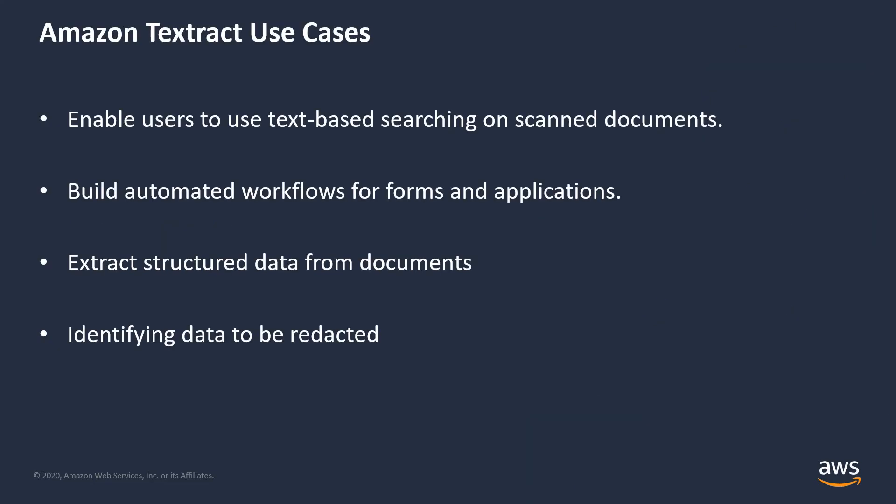Some examples of use cases are enabling users to perform text-based searching on documents that may be scanned images or PDFs. You can build automated workflows based on the receipt of a document — for example, automating claim applications or change of address notifications from your customers. With Textract's ability to process both forms and labels, you can extract structured data from forms. You can also use Textract to help identify sensitive data in forms that may need to be redacted.